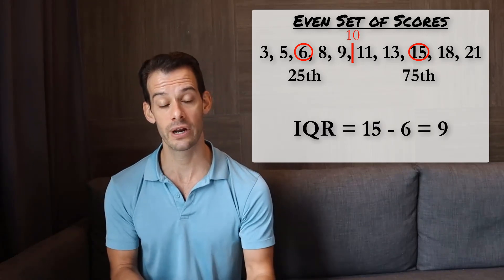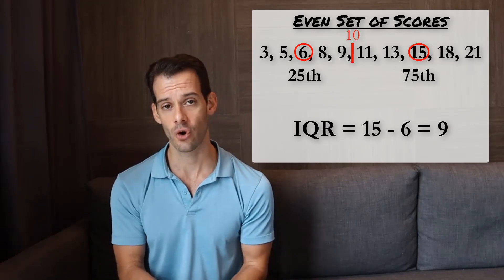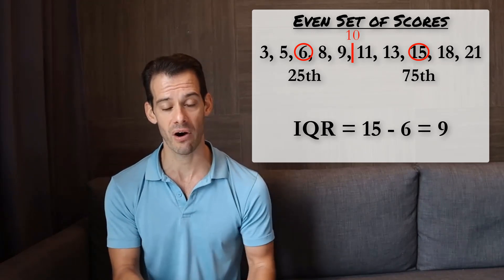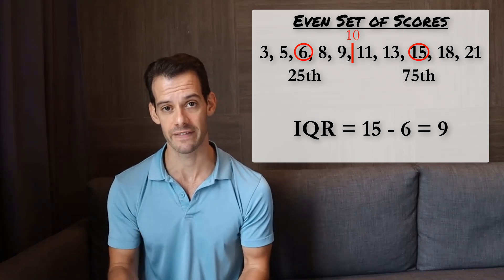Now in this case we're excluding the median because it's not actually one of our values. So it makes sense to say that, well, 10 is not really part of the lower half of the data and it's not part of the upper half of the data.